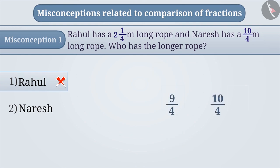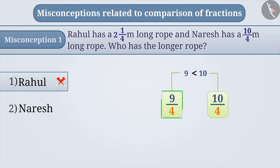Now we will compare it with 10/4. Since the denominators are equal, we compare the numerators 10 and 9. Therefore, 10/4 is greater than 9/4. That means Naresh has the longer rope.